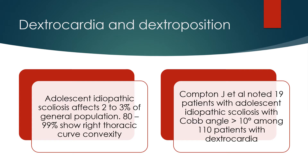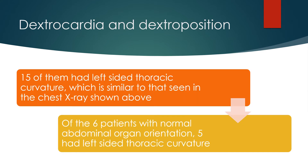Adolescent idiopathic scoliosis affects 2-3% of the general population, and 80-99% show right thoracic curve convexity. Compton and Associates noted 19 patients with adolescent idiopathic scoliosis with Cobb angle more than 10 degrees among 110 patients with dextrocardia. 15 of them had left-sided thoracic curvature, which is similar to that seen in the chest X-ray shown above.